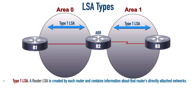If a router is connected to a network - and we assume it's connected to at least one network segment, otherwise it's not going to be talking to any other routers - a router is going to use Type 1 LSAs to advertise directly connected networks. In this case, R1 is going to be advertising that link between itself and R2. R2 is going to be advertising the same thing, but everybody knows it's the same link. So we're going to have a single Type 1 LSA in our link state database representing that link between R1 and R2. Same thing in Area 1 - we've got one Type 1 LSA representing the network between R2 and R3.